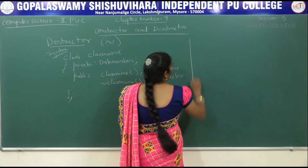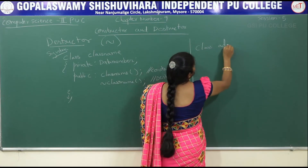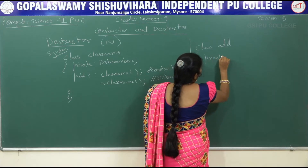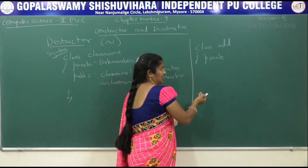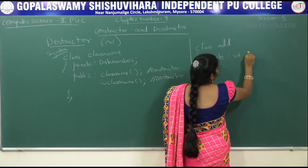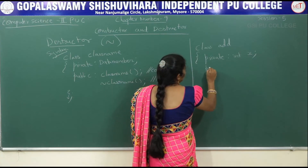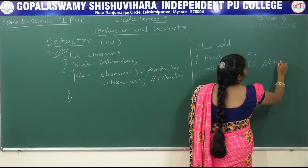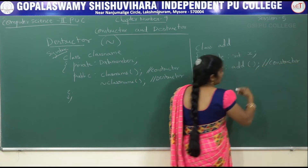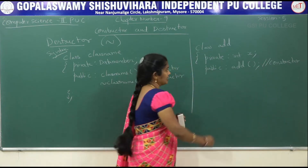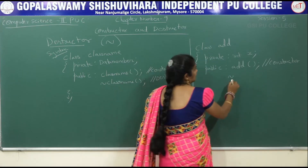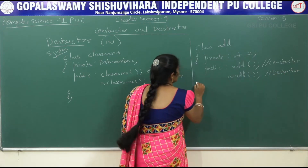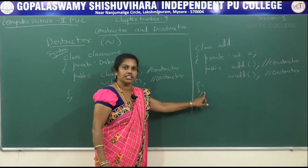For example, consider the class name 'Add'. In the private section, declare a variable such as int x. In the public section, write the Constructor as 'Add()'. To write the Destructor, use the tilde operator followed by the class name: '~Add()'. Then close the class with a flower bracket and semicolon.